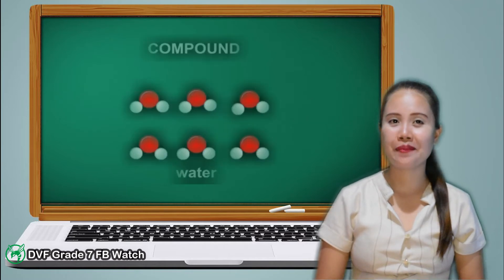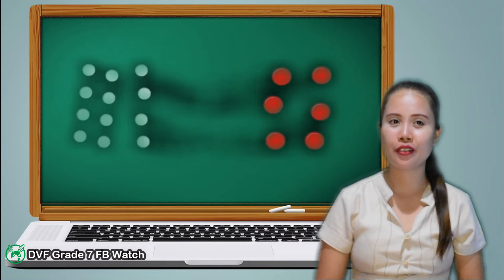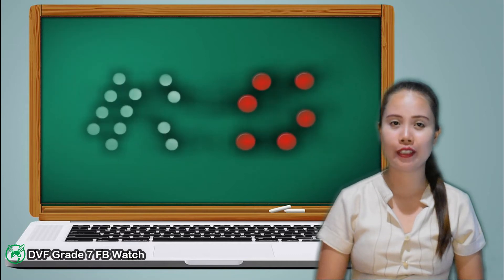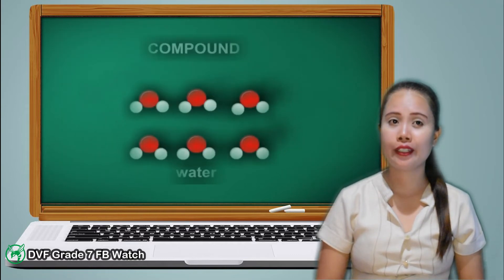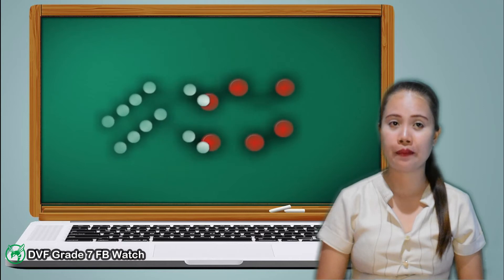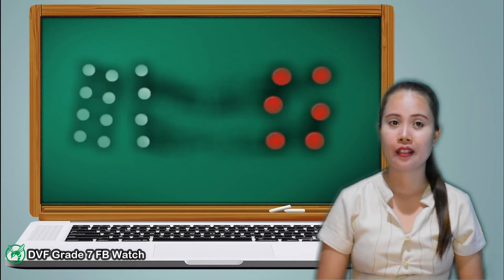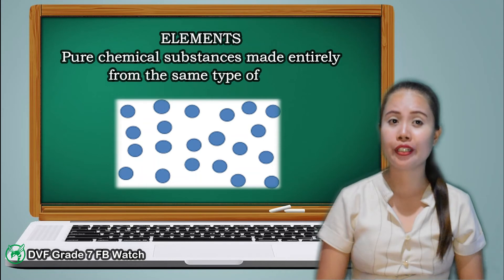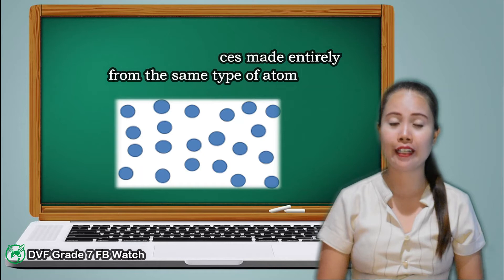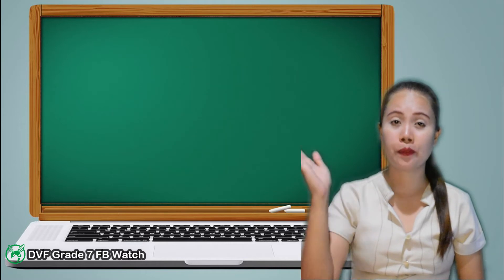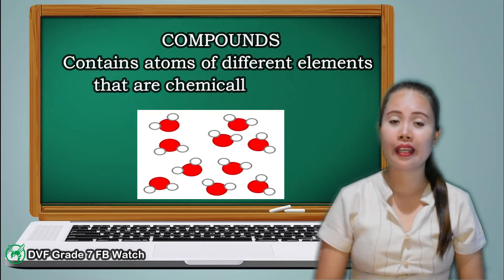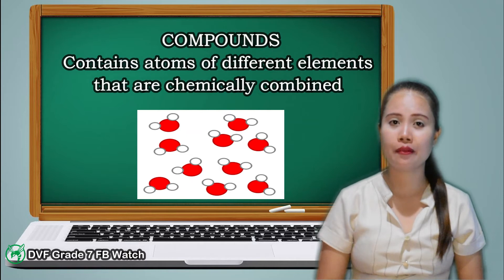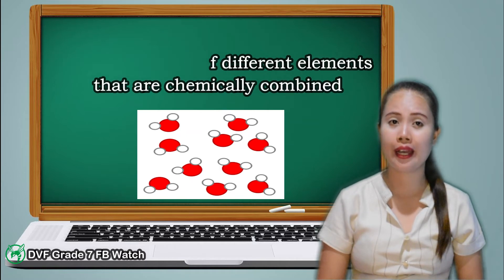Both elements and compounds are distinguished by different sets of properties. Now, look at this illustration of elements. As you can see, elements are pure chemical substances made entirely from the same type of atom, while compounds contain atoms of different elements that are chemically combined.